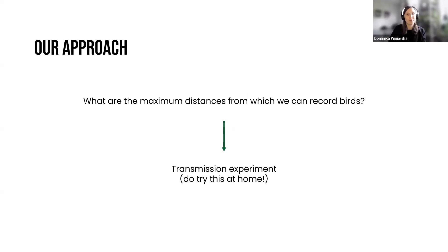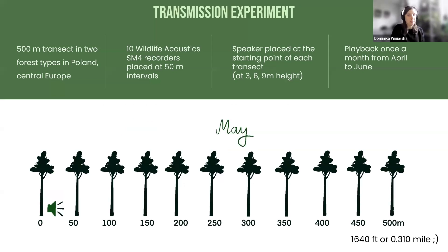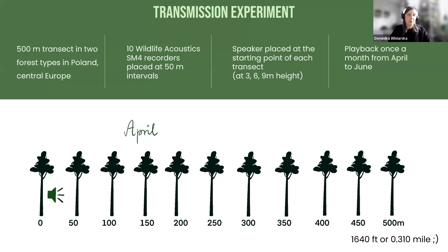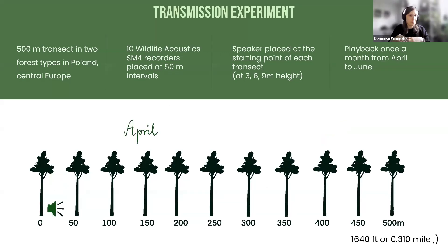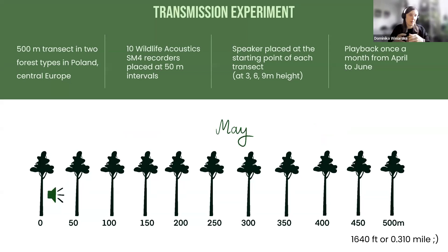This is our approach. We wanted to measure the maximum distances from which we can record birds. To do that, we performed a transmission or propagation experiment — and please do try this at home, because this is basically the recipe to measure your own detection ranges. We developed two straight-line transects in two types of forests in Poland, in Central Europe. The first was coniferous forest consisting mainly of pine trees, and the second was deciduous forest, which mainly had beech trees. The transect length was 500 meters.